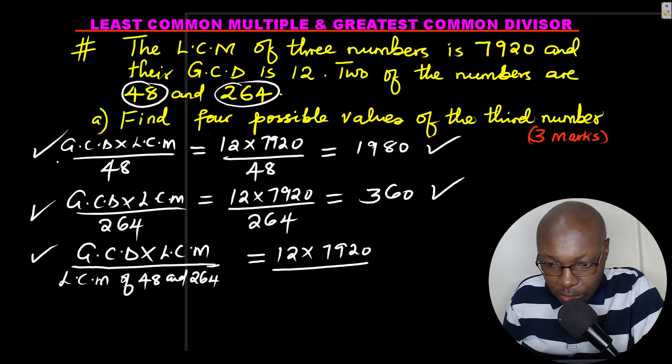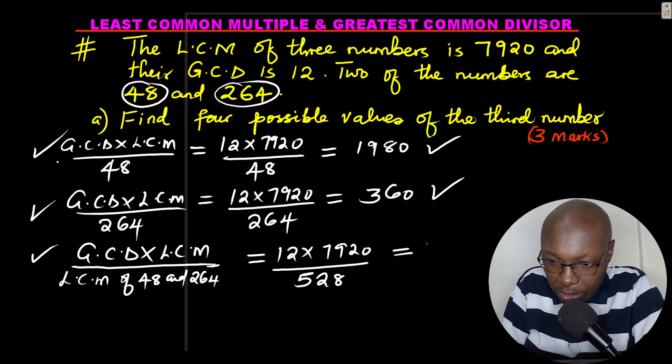And when you calculate, you will get the LCM of 48 and 264 as 528. Now, work out this to get the third number, 12 times 7920, divided by 528, you get 180.